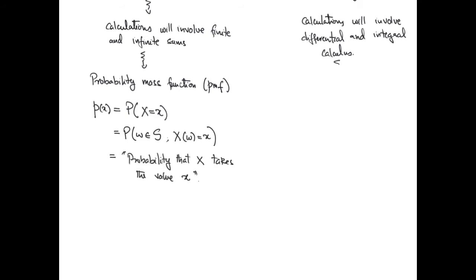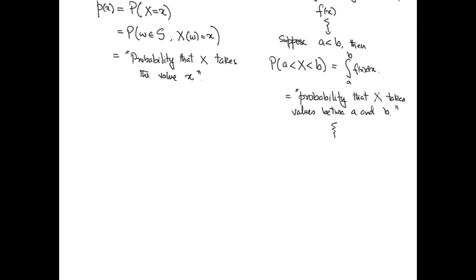In the context of continuous random variables, we define what is known as the probability density function. This is a function f of x that is defined on the set of all real numbers, and it will essentially help us calculate the probability that the random variable lies between the points a and b. This probability is calculated by computing the integral a to b fx dx. An important property of a continuous random variable is that the probability that the random variable is going to take a fixed value c is always going to be zero.